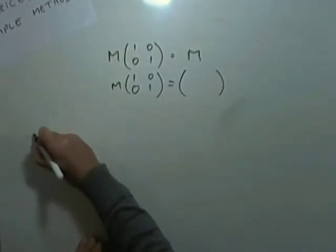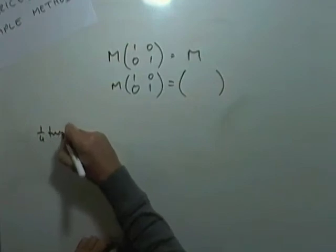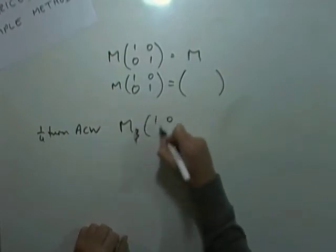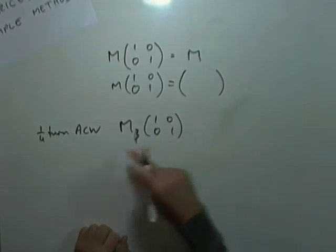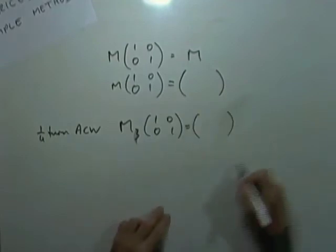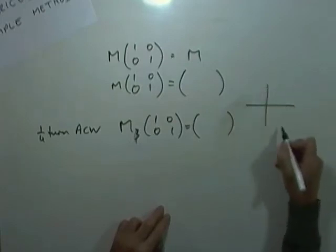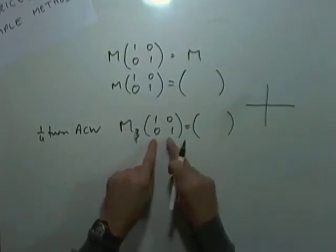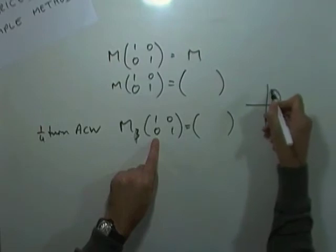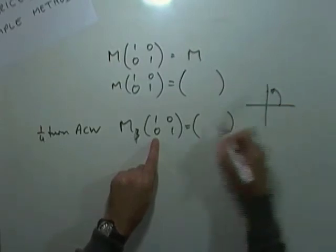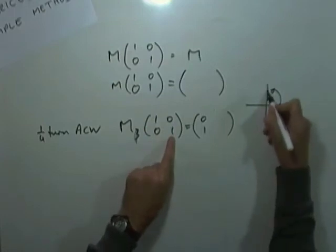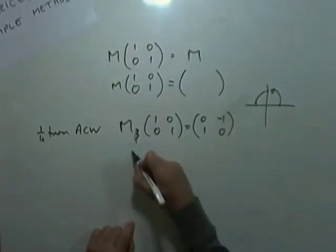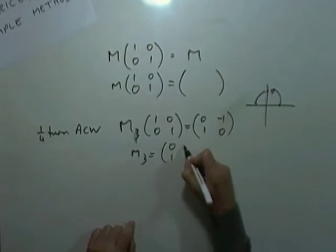What about the matrix associated with a quarter turn anticlockwise? Call that m3. Again, if you multiply that by the identity element, you'll end up with m3. So rotation of a quarter turn anticlockwise. Consider it as this matrix actually operating on a pair of points, the point one zero. That would turn round anticlockwise to become zero one. And zero one, rotated anticlockwise, would become negative one zero. So that's matrix three. So m3 would be zero one, negative one zero.